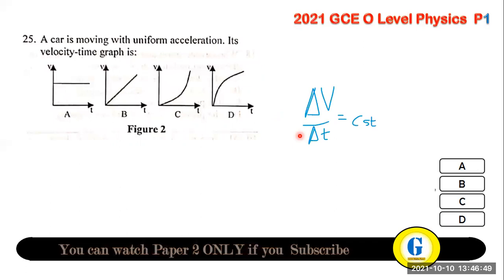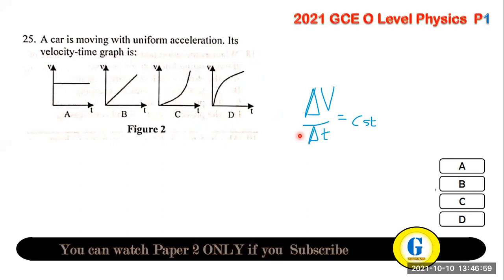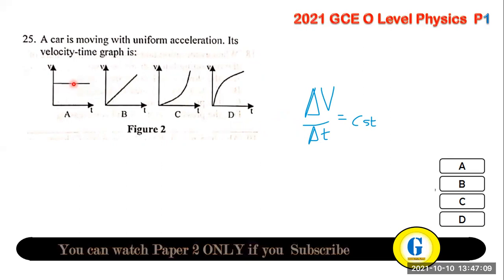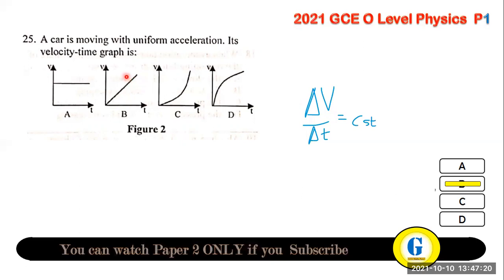Question 25: a car moving with uniform acceleration — its velocity-time graph. If acceleration is constant, the rate of change of velocity is constant, so the graph is a straight line with constant gradient. The answer is B — a straight line with constant slope.